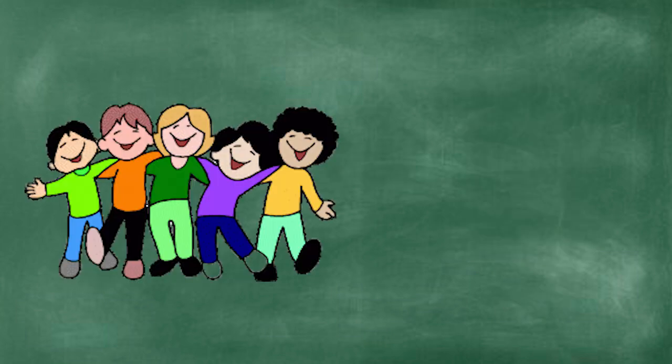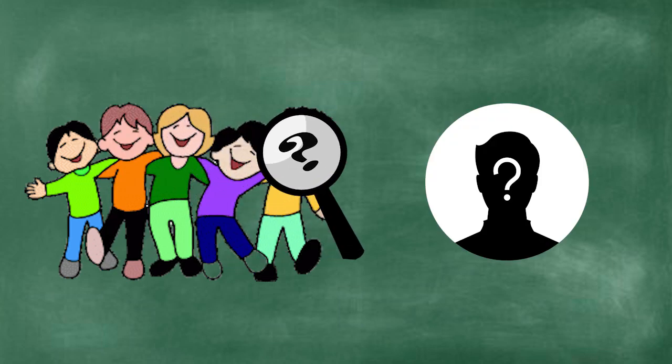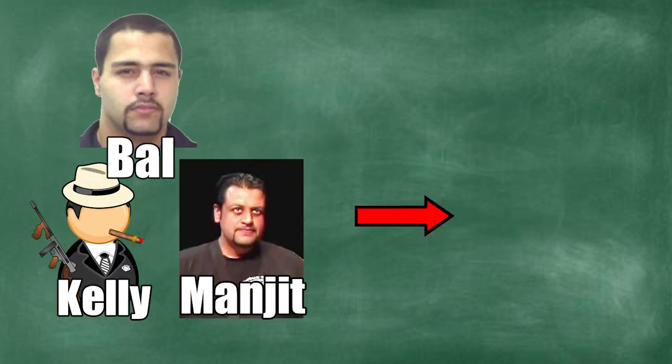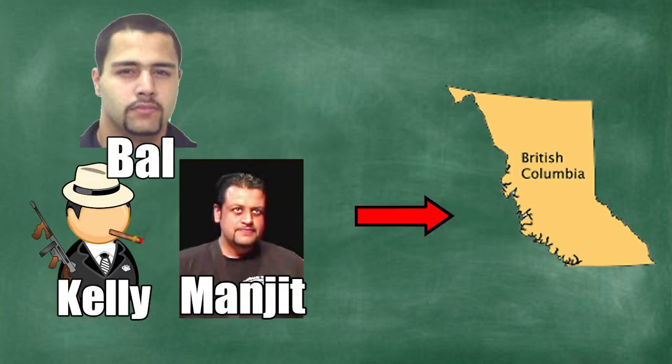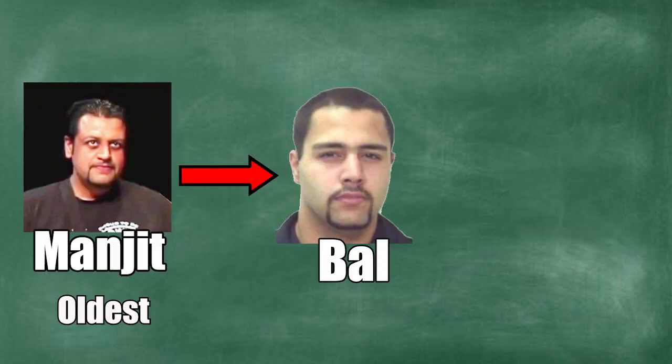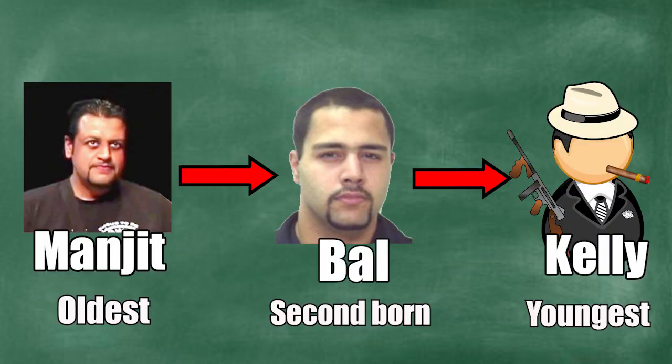Unfortunately, their early lives remain shrouded in mystery. All we know is that they were born and raised in Richmond, British Columbia. Of the three, Manjeet is the oldest, Bal is the second born, and Kelly is the youngest.